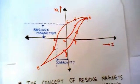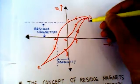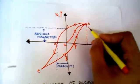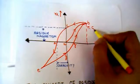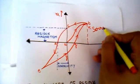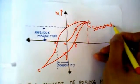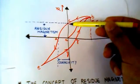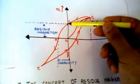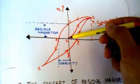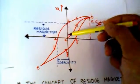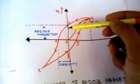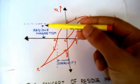If you decrease the current, this is the position where your magnet has saturated. Now if you decrease the current to zero, there will still be some magnetism. In this position the current is zero, but there is still some magnetism that is left, and this is called the residue magnetism.